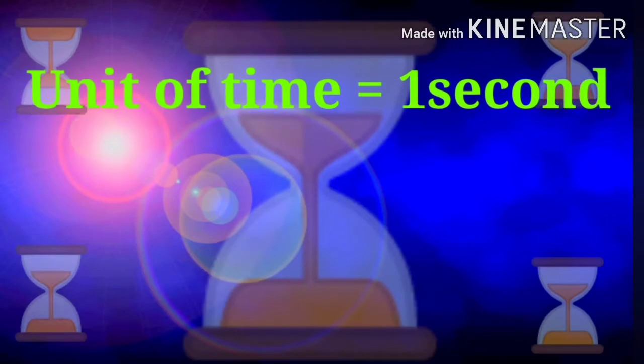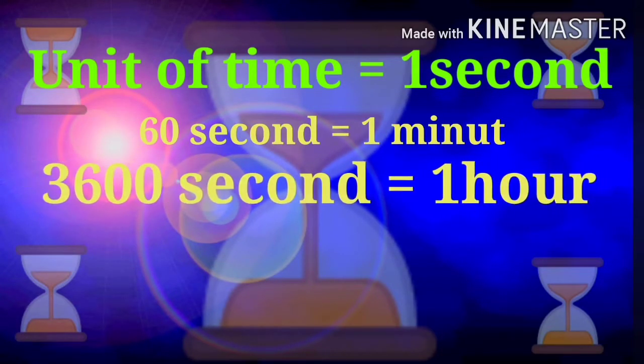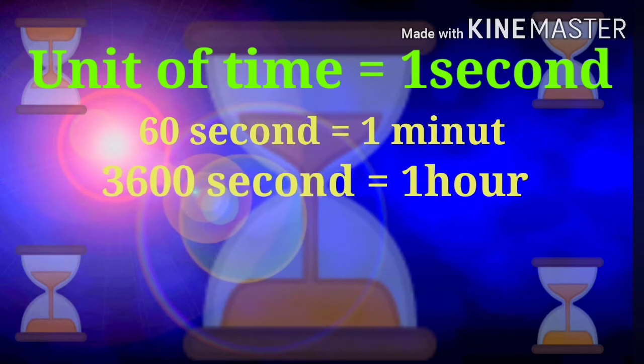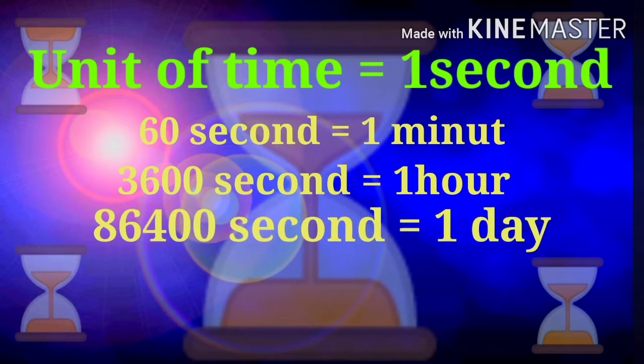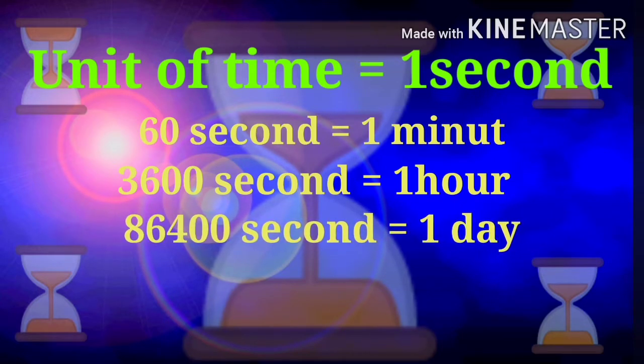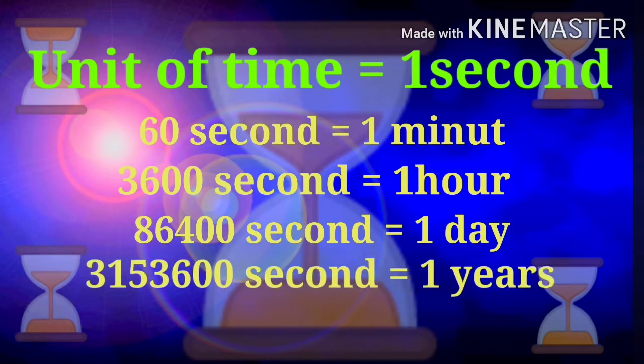The unit of time consists of 1 second. 60 seconds make 1 minute, 3600 seconds make 1 hour. Similarly, 86,400 seconds make 24 hours, i.e. 1 day and 1 night. And 31,536,000 seconds make a whole year with 365 days.